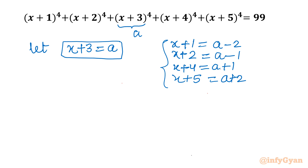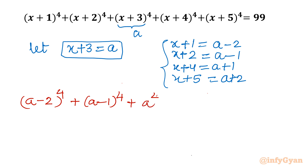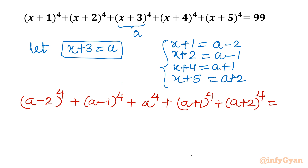The equation will become: (a − 2)⁴ + (a − 1)⁴ + a⁴ + (a + 1)⁴ + (a + 2)⁴ = 99.